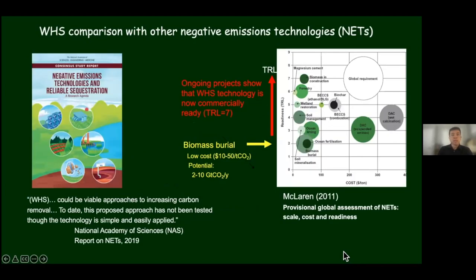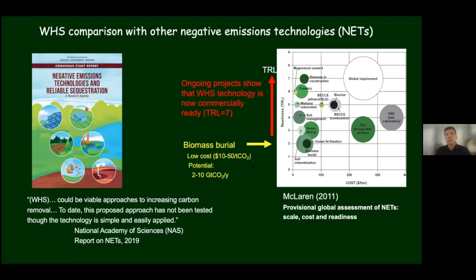Let me go through my reasoning for those claims with this presentation. First, a quick comparison with other negative emissions technologies. An earlier review paper by McLaren put biomass burial at a pretty low-cost corner, but at technology level two. The potential, as shown by two of our early papers and other work, is 2 to 10 gigatons CO2 per year. Since the publication of that paper, with ongoing and past projects, we now believe the technology is commercially ready.